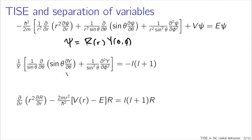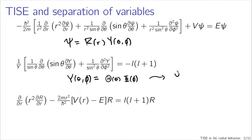We can again apply separation of variables to the angular part, expressing Y(theta, phi) as some function capital Theta of theta times some function capital Phi of phi. That gave rise to our Y_l^m(theta, phi), our spherical harmonics. The radial part we put off, so let's see what that looks like. What does the radial equation get us?